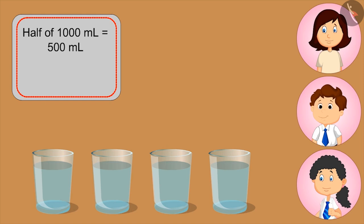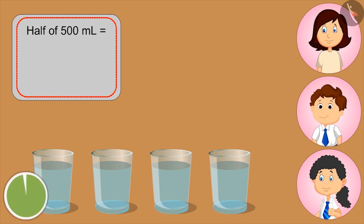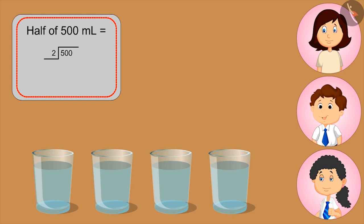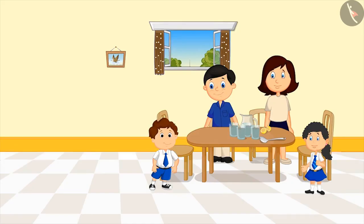Yes, Mom. Can you tell how much lemonade is in one glass? Half of five hundred ml. Very good. So what's that? Kids, you can pause the video and think about the answer. We have to divide five hundred by two. Two fifty? Very good, Bholu. Daddy, we all got two hundred and fifty ml of lemonade.